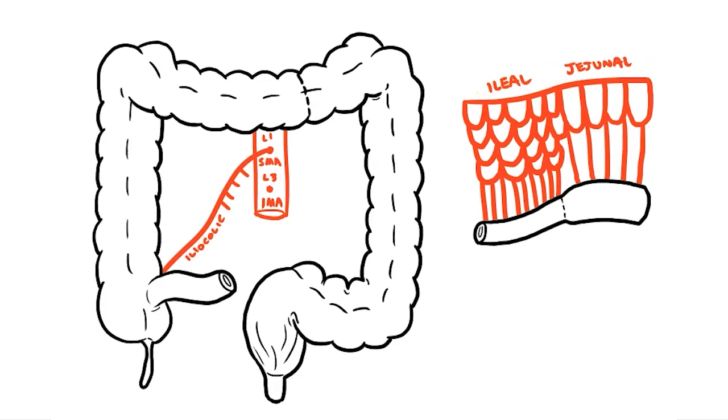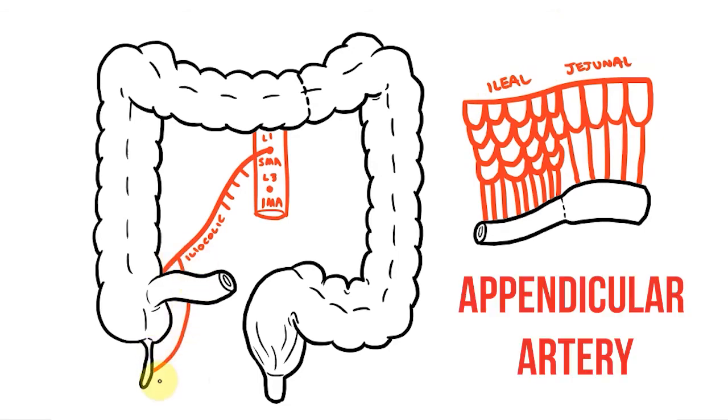But what about the large intestine? Well this also receives some of its blood supply from the superior mesenteric. First we'll have an appendicular branch that heads down to the appendix.